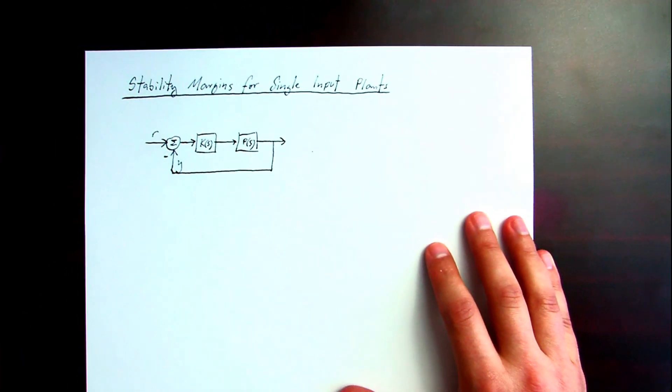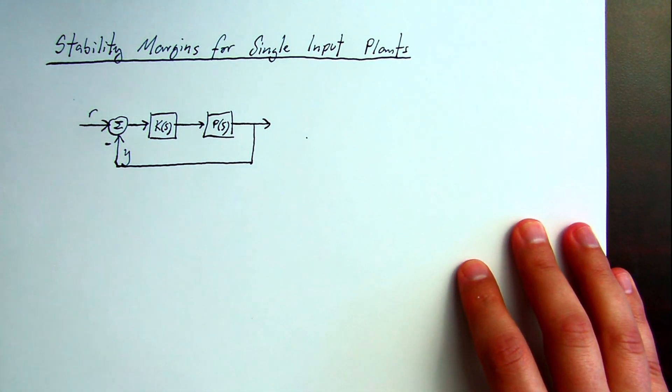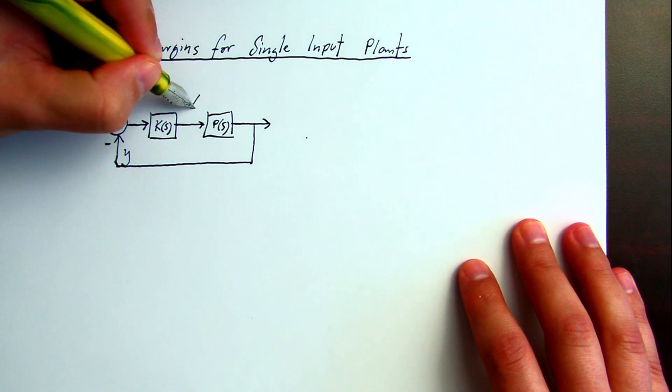Plant, tracked variable Y. Stability margins are concerned with gain and phase disturbance at the plant input.